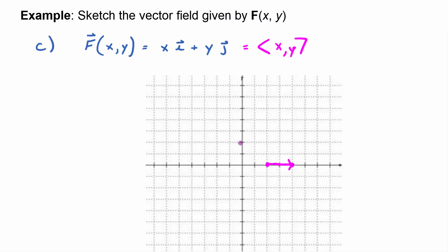Whereas if I made the input 0, 2, then the tail is at 0, 2, and I would go over 0, up 2. If I made the input negative 2, 0, I would go over negative 2 and up 0.